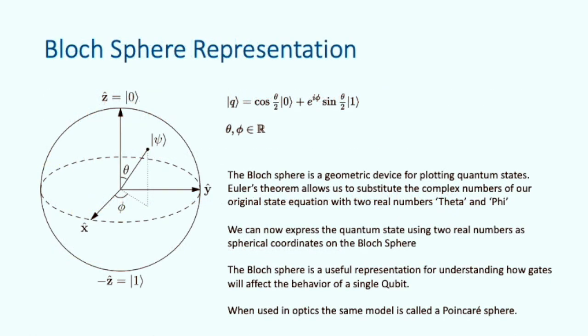You will often see a qubit represented in a different notation. The Bloch sphere is a geometric device for plotting quantum states. Euler's theorem allows us to substitute the complex numbers in our original state equation with two real numbers, theta and phi. This is a useful tool for visualizing the state of a single qubit. Some people may already be familiar with this similar model from optics called the Poincaré sphere.